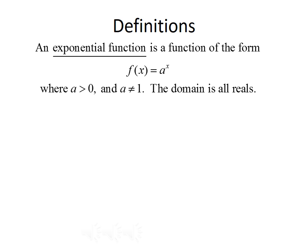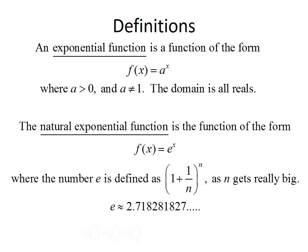Before we go any further, let's talk about a couple of definitions. First, an exponential function is a function of the form f of x equals a raised to the x power, where a is greater than 0 and a does not equal 1. The domain of an exponential function is all real numbers. Second, we have a special type called the natural exponential function, of the form f of x equals e to the x, where e is defined as 1 plus 1 over n raised to the n power as n gets really big. e can be approximated as 2.718281827, and the decimal keeps going on.